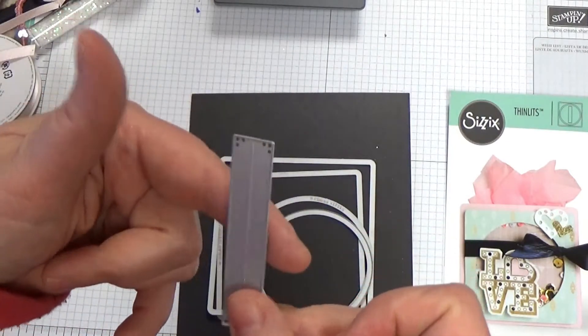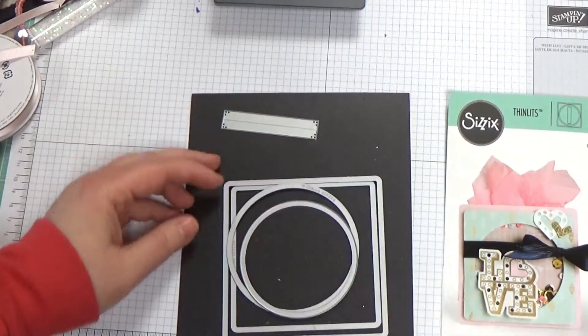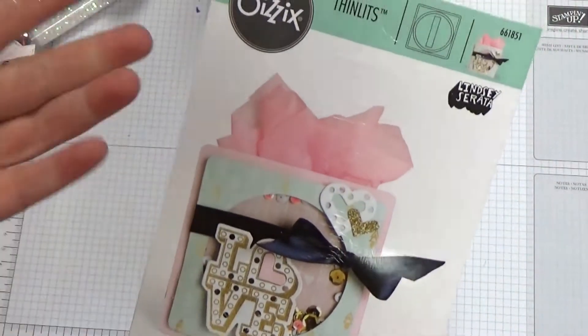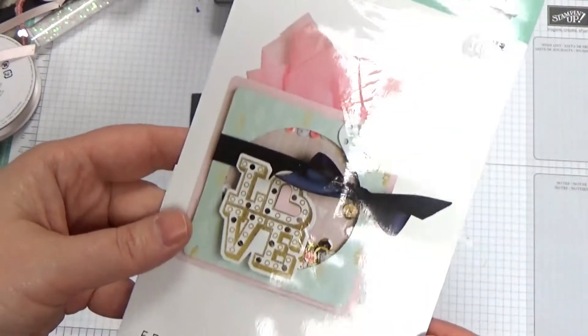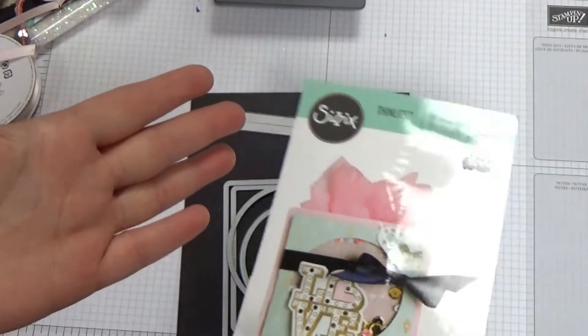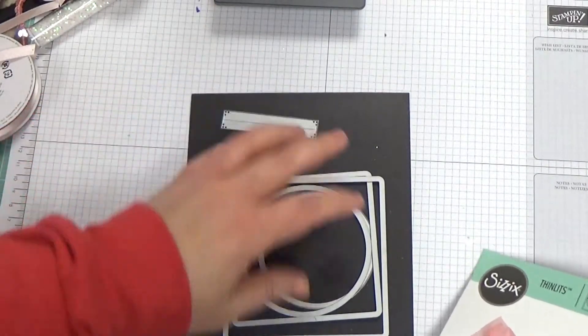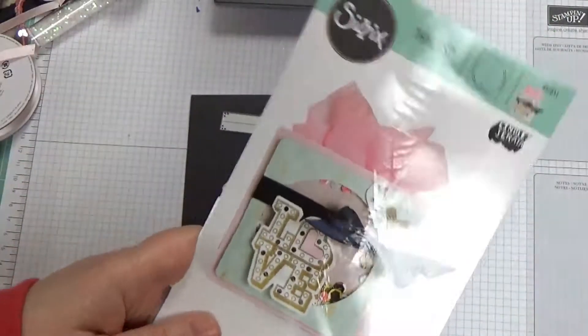Here are the pieces you get: this scored piece that makes the gusset, and then you get two squares and two circles. It makes quick work of making a shaker card. Here's the example they have of it with tissue stuffed in there. You don't have to use it for a shaker card - there's certainly usable pieces for card fronts and whatever else.